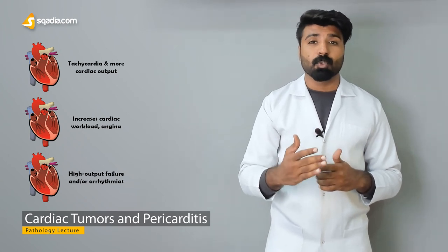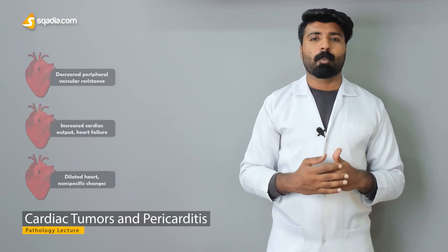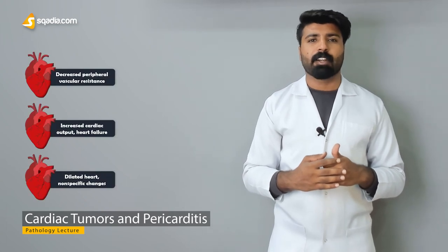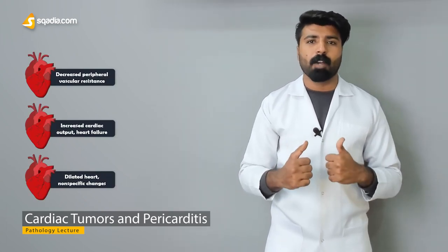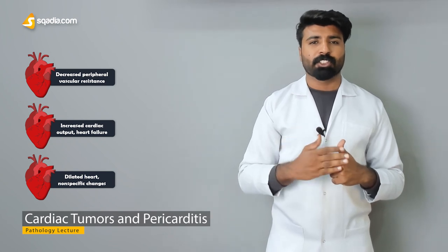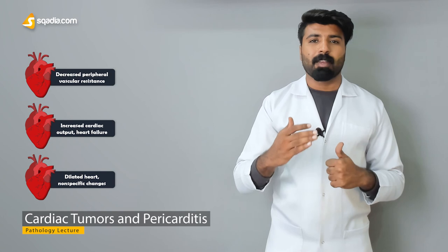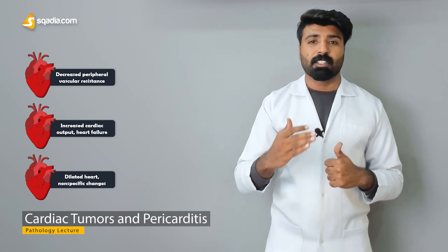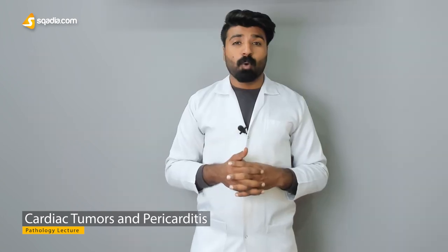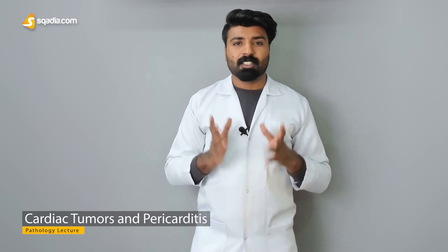At the end, we're going to talk about metabolic heart diseases, which will include the hyperthyroid patient — how hyperthyroidism leads to cardiac disease. Then we'll cover beriberi disease, which is divided into dry beriberi and wet beriberi, and discuss how they are differentiated and what pathological manifestations they lead to. That's all we'll be covering in this lecture.